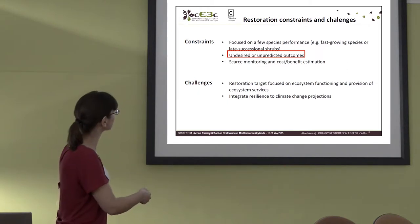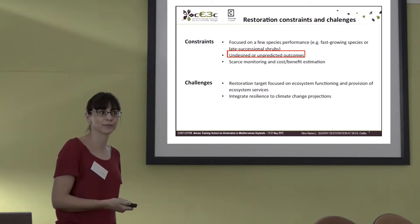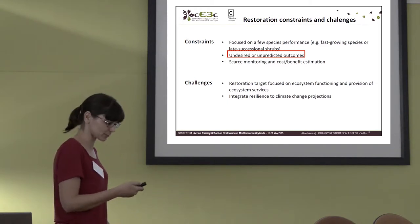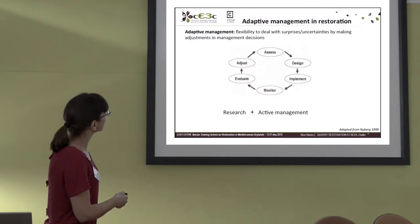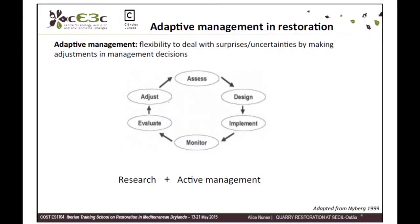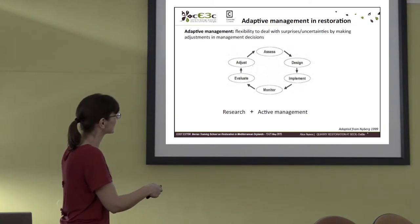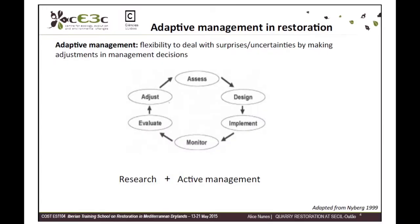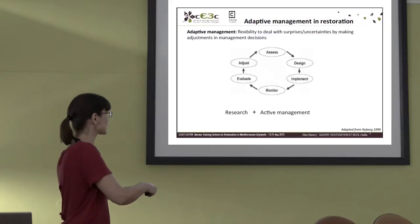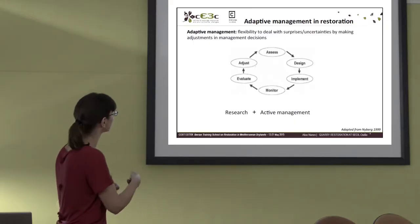When we face these undesired or unpredicted outcomes, we can use adaptive management, which very briefly means dealing with unexpected results in a flexible manner by making adjustments in management decisions. We have a certain degradation problem, we assess it, we design a form of recovering, we implement that strategy, then we monitor, we evaluate, and if necessary, we adjust and start this loop again. It is combining research with active management.